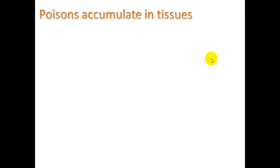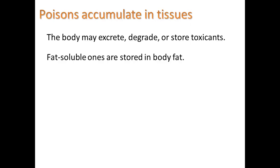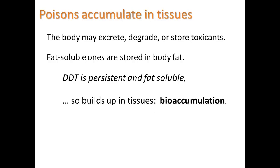Poisons can accumulate in tissues. They're in the environment, some lasting for a long time, and they find their way into our bodies through the air we breathe, the food we eat, the water we drink. The body may excrete, degrade, or store these toxicants. Ideally we excrete them, or our liver will degrade them and our body excretes the breakdown products. But sometimes they get stored inadvertently in the fat tissue of our bodies. Fat-soluble ones are stored in body fat. DDT is persistent and fat-soluble, so it can build up in tissues — we call this bioaccumulation.